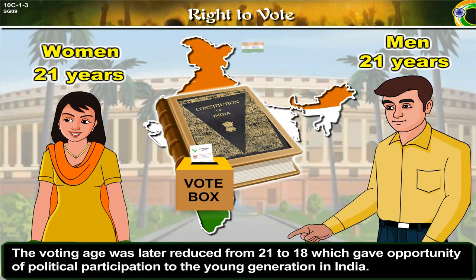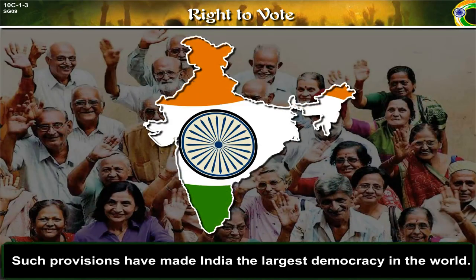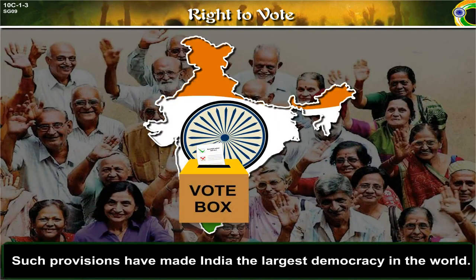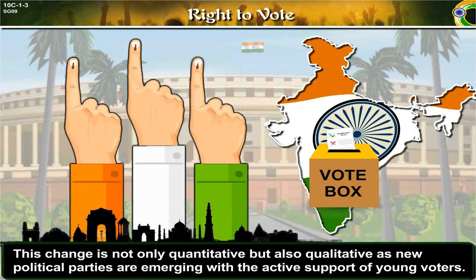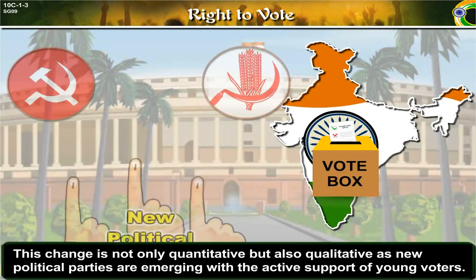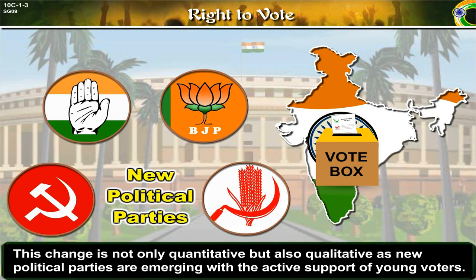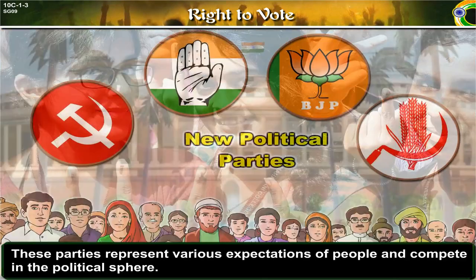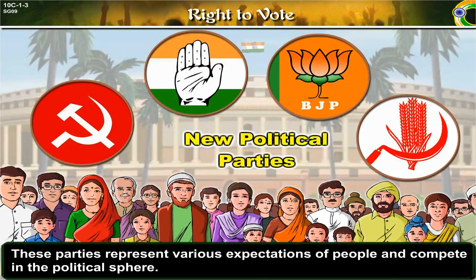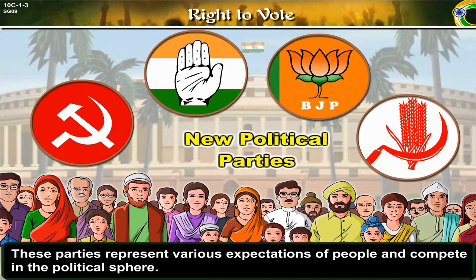The voting age was later reduced from 21 to 18, which gave the opportunity to vote to the young generation in India, thereby increasing political participation. Such provisions have made India the largest democracy in the world. India has the largest number of voters compared to any other democratic nation. This change is not only quantitative but also qualitative, as new political parties are emerging with the active support of young voters. These parties represent various expectations of people and compete in the political sphere.